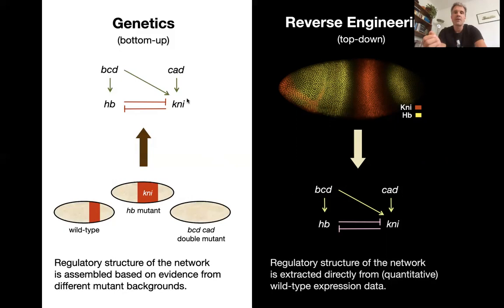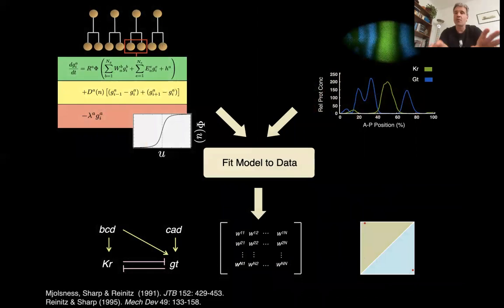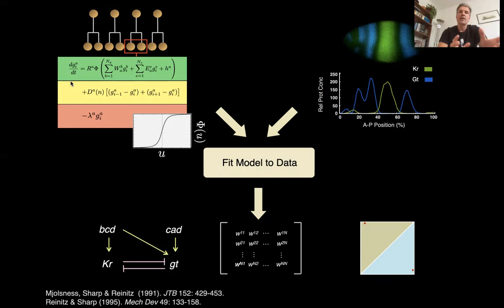This is called reverse engineering — a top-down version that does not necessarily rely on any perturbation. It is complementary and independent of the genetic approach. Underneath we have a dynamical systems model based on differential equations, like we encountered with the toggle switch. It occurs in a row of nuclei that divide over time. The equations are differential equations: dG/dt — the change in concentration of a gap protein over time — just like in that toggle switch model we looked at earlier.